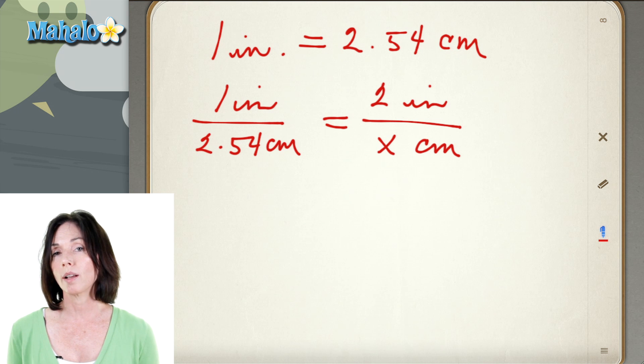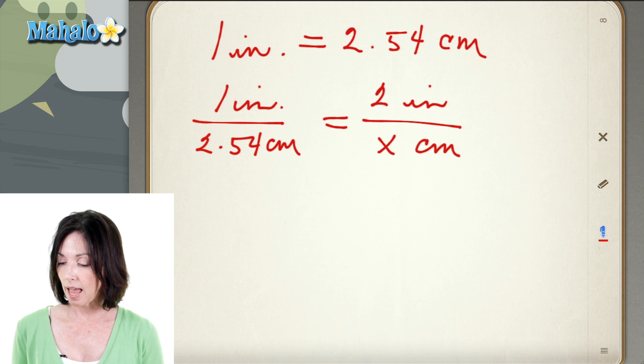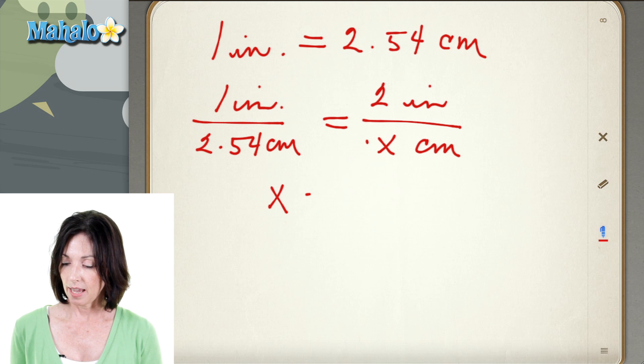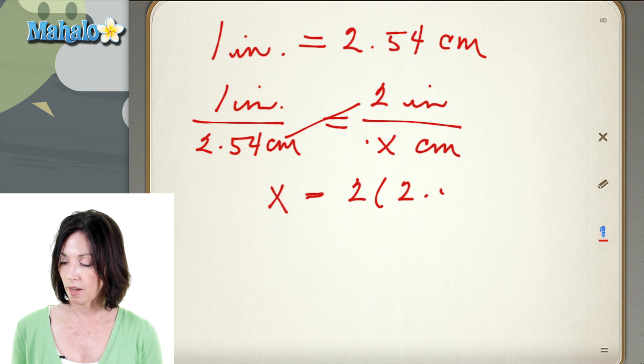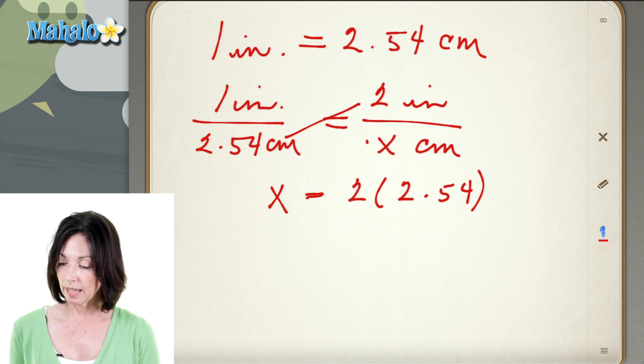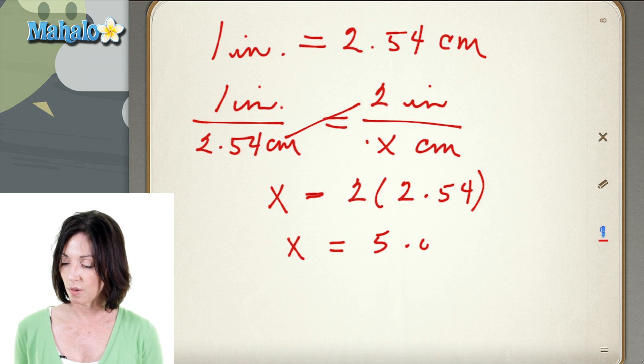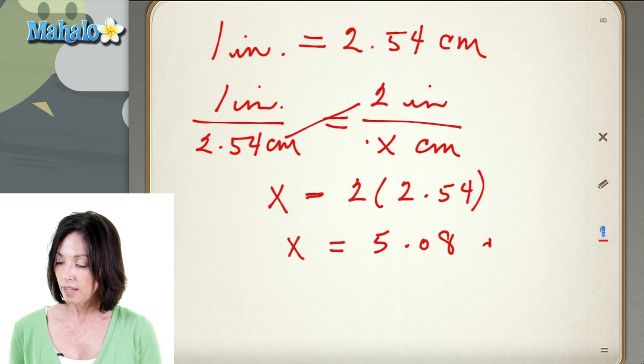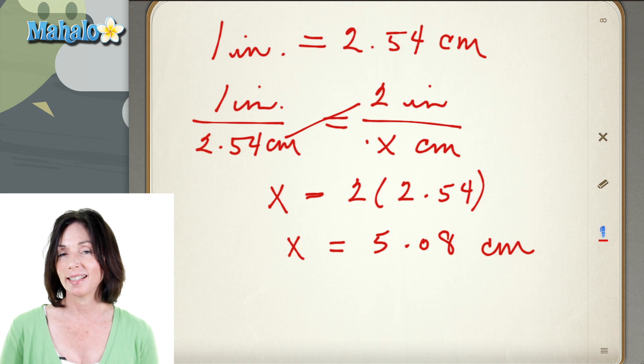Now you can just cross multiply to figure this out. 1 times x is just x and then we cross multiply this way and we get 2 times 2.54. And 2 times 2.54 is 5.08. So 2 inches is the same as 5.08 centimeters.